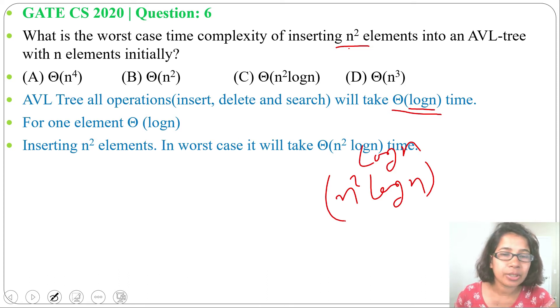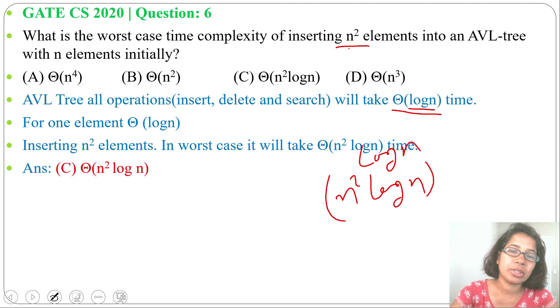Now check in which option it is present. It is present in option C. So answer will be Θ(n² log n) for inserting n² elements into an AVL tree.